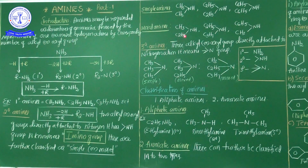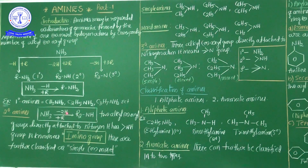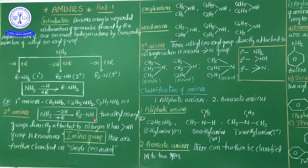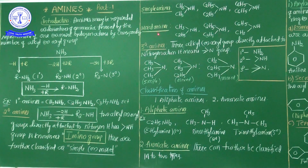Simple amines and mixed amines are observed in two-degree (secondary) amines. Simple means same category of alkyl or aryl group; mixed means different types of alkyl or aryl groups. In summary: two hydrogens removed from ammonia, replaced by two alkyl or aryl groups = two-degree or amino group. If the two groups are the same, it is a simple amine; if different, it is a mixed amine.